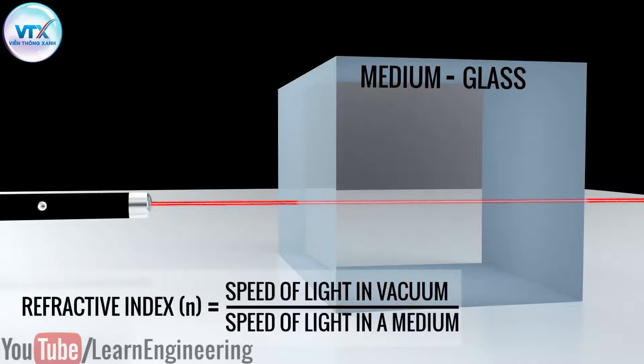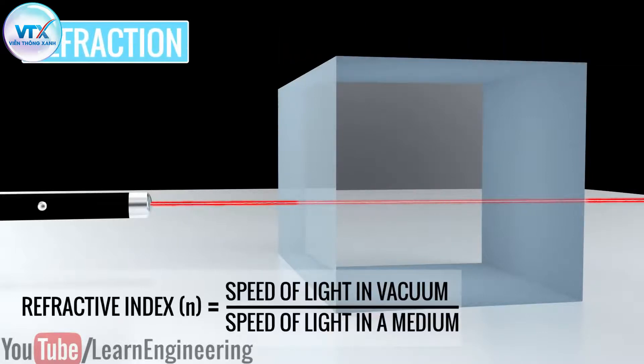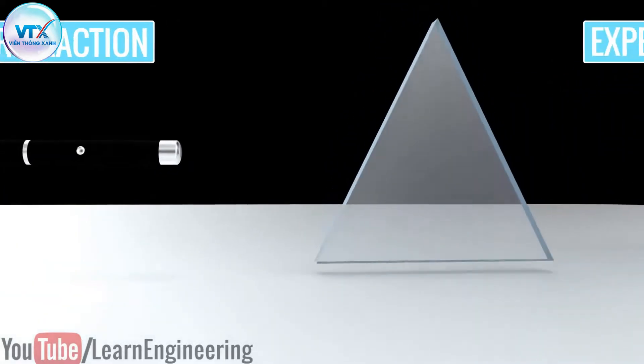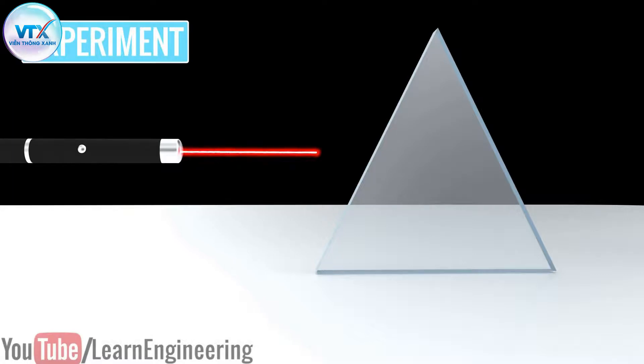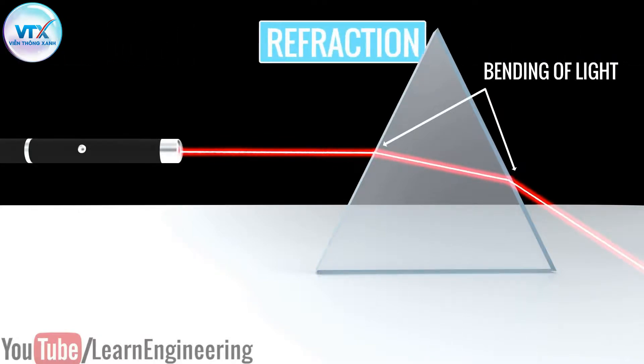This variation in the speed of light leads to another interesting phenomenon: refraction. To understand what it is, let us carry out an interesting experiment. In this experiment light passes through a prism. You can see that at the interface the light gets bent instead of going straight. This phenomenon is known as refraction.